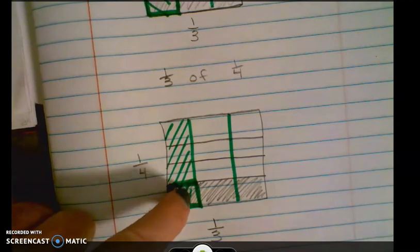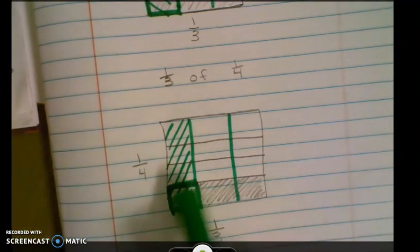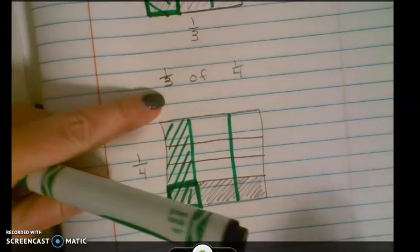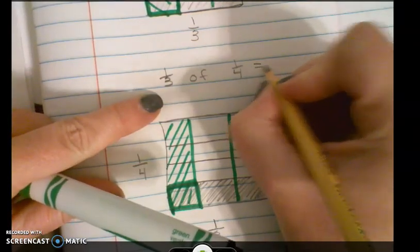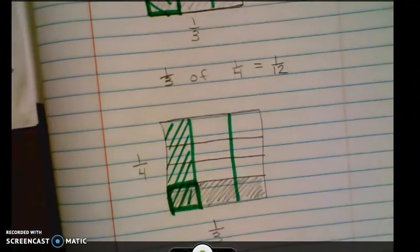So our answer is one out of one, two, three, four, five, six, seven, eight, nine, ten, eleven, twelve. So one-third of one-fourth is one-twelfth.